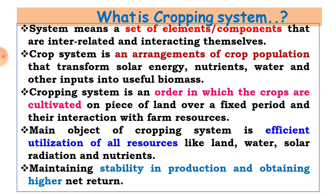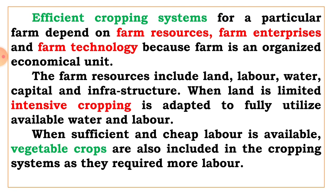The enterprises which are interrelated to each other — the main objective of cropping system is efficient utilization of all resources: solar energy, land, water, and nutrients. Also the objective of cropping system is to maintain stability in production and obtaining higher net returns. Through intercropping you have to stabilize crop production and obtain higher net profit to the farmers.